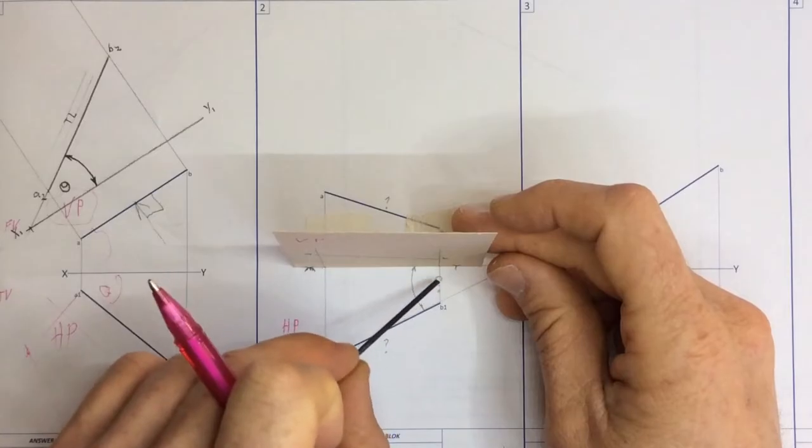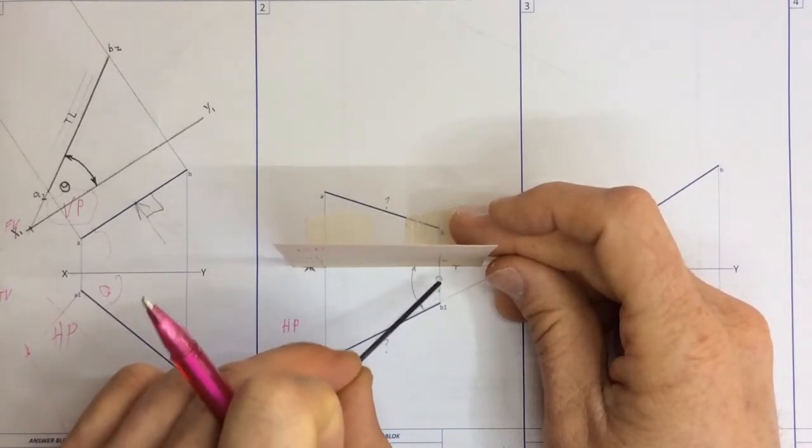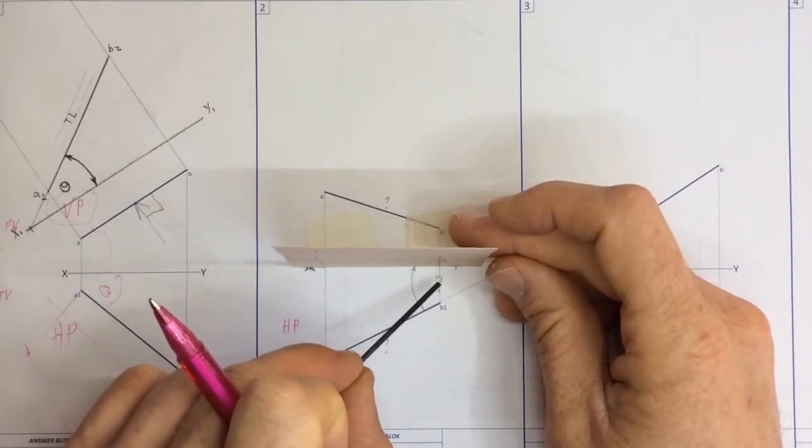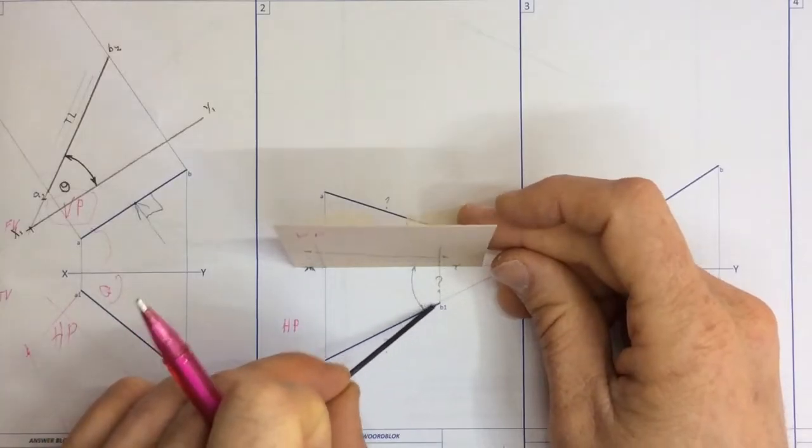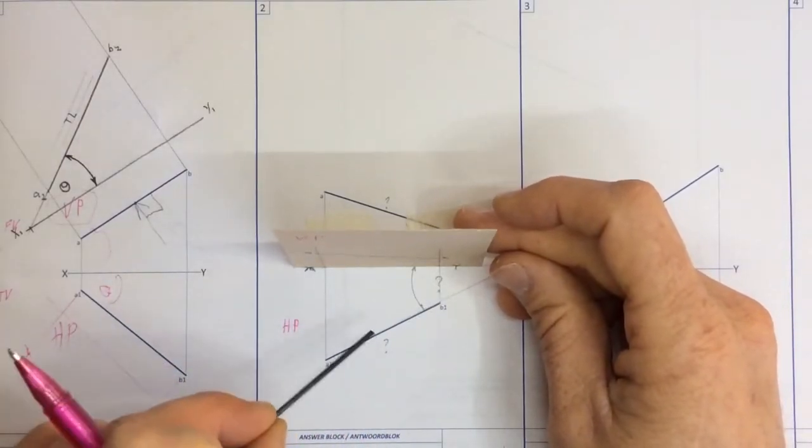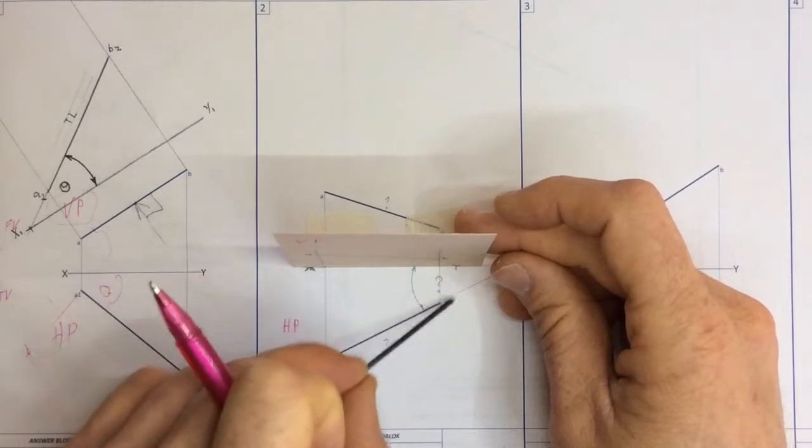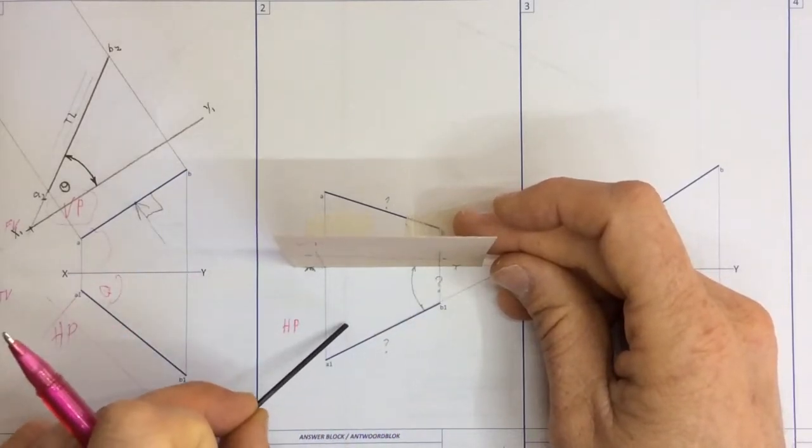That angle that you're seeing there isn't the exact angle that I'm wanting. The reason being is that this line segment that you're seeing in this horizontal plane is not a true length. You can only get the true inclination once you've got the true length.